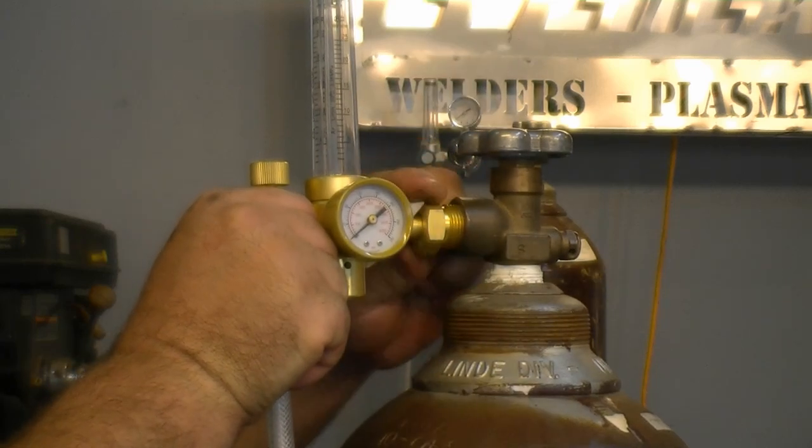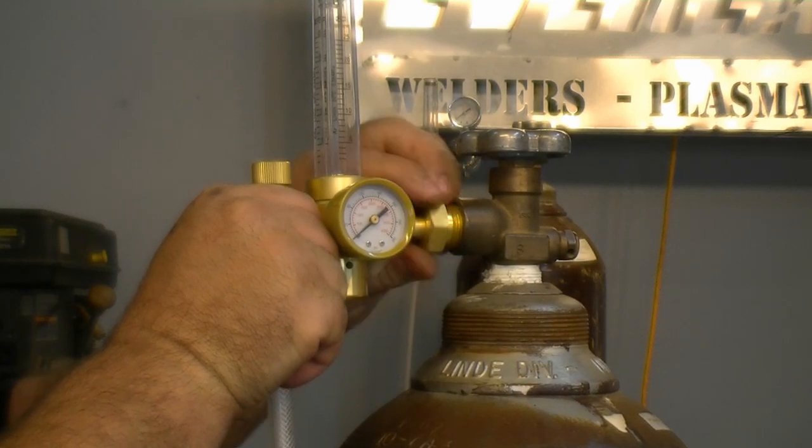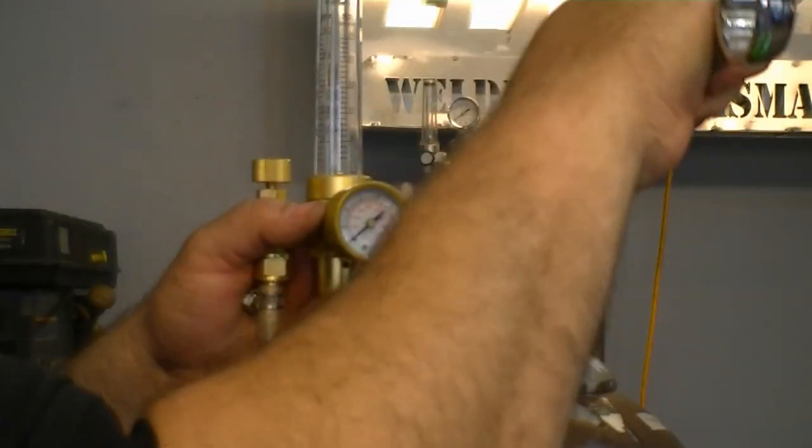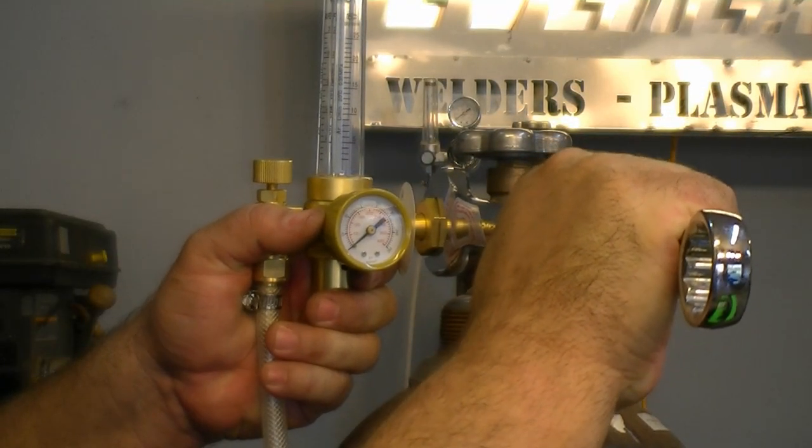Next install the regulator onto the cylinder using your fingers to prevent cross threading. Then take a wrench to snug the fitting. Be careful not to over tighten the fitting.